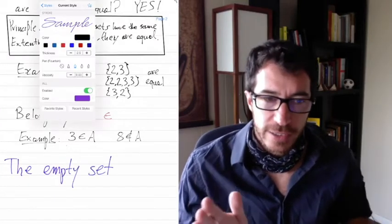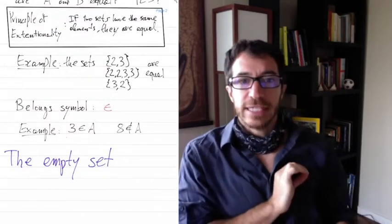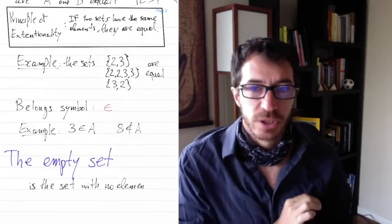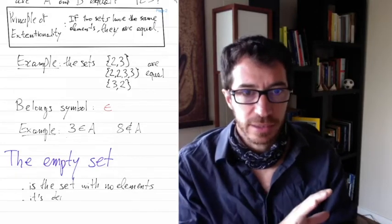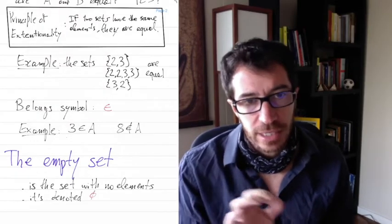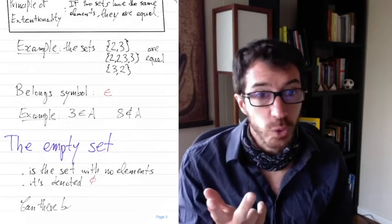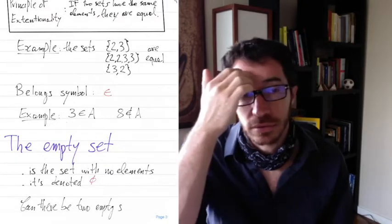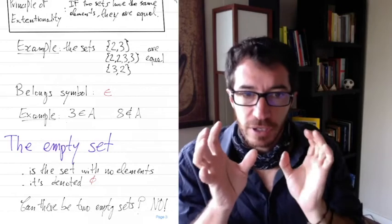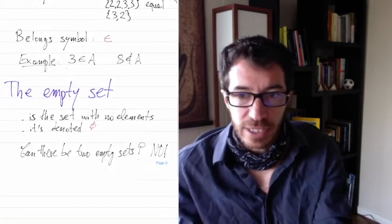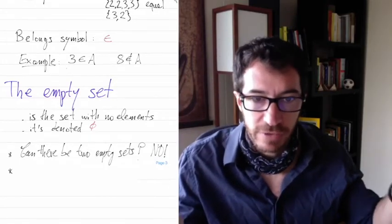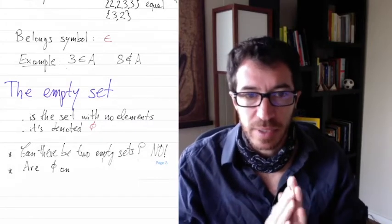Let's move on to the empty set. The empty set is a set that has no elements at all - that's why it's called the empty set. It's a set, but it has nothing inside. We denote it with the letter phi, a Greek letter. Can there be two different empty sets? No - because both empty sets have the same elements, namely none. Same elements means they are the same set.